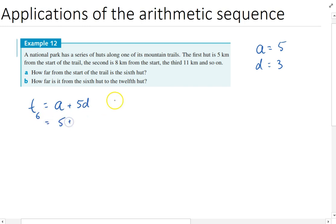The a value is 5 and the d value is 3. So 5 times 3, that's 5 + 15, which is 20.